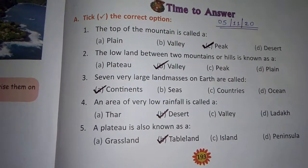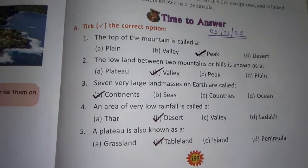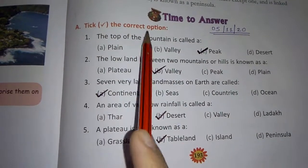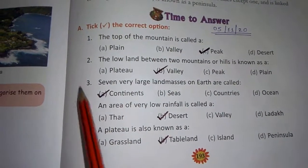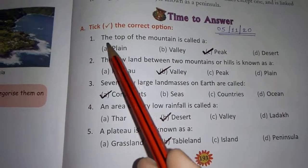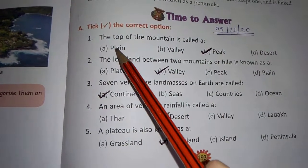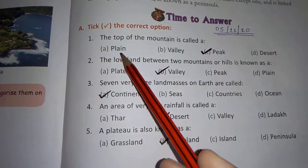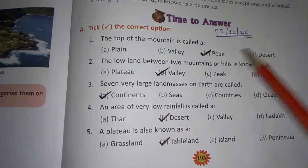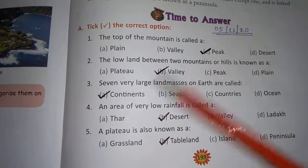Open page number 193. First question: take the correct option. First, the top of the mountain is called — options are plain, valley, peak, desert. The correct option is peak.